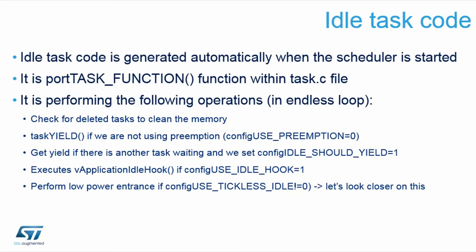FreeRTOS defines an idle task. This is a special task implemented to ensure there is always at least one active task running when nothing else is available. It is created automatically by the kernel. The idle task has an interesting feature: you can create an idle hook which gets called whenever the idle task runs. This allows you to implement a low-power mode — when the microcontroller has no other task to schedule, the idle hook can put it into sleep or stop mode.